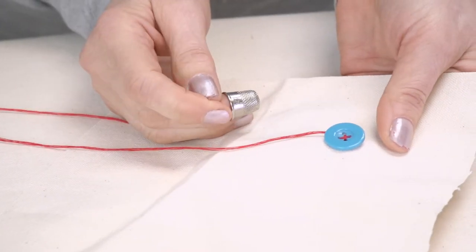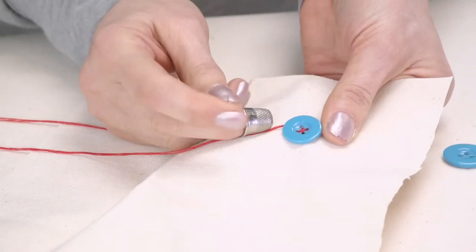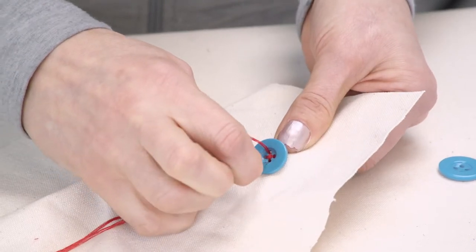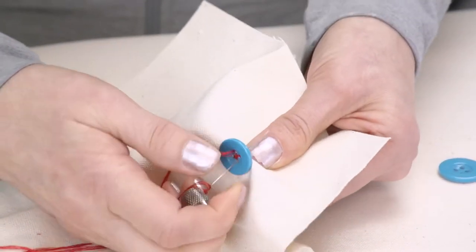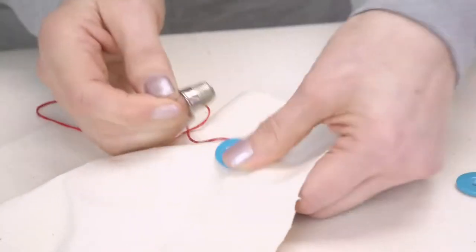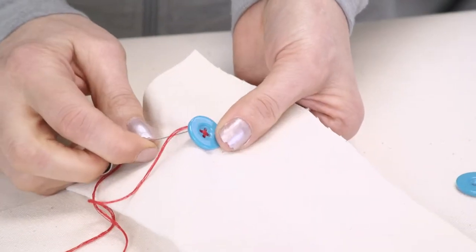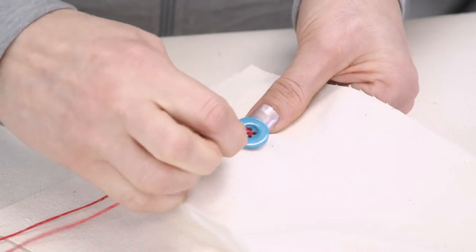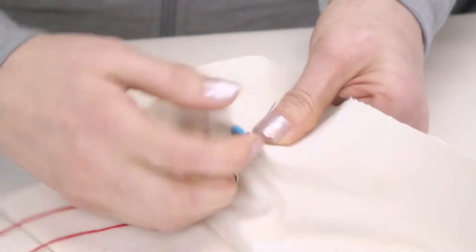If it's a button that is decorative, you could be done right now. This is a used button, so we want to add just a little bit more security. So we're going to go over both those once again. One, up through this, down through here, just prick the material.